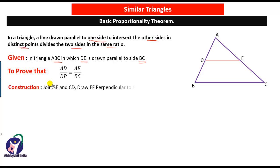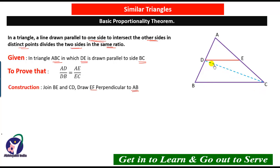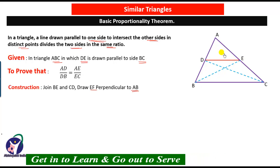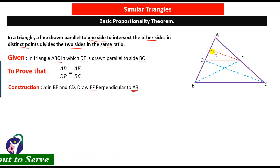For the construction, join BE and CD, and draw EF perpendicular to AB. So EF is perpendicular to AD, making a 90 degree angle.